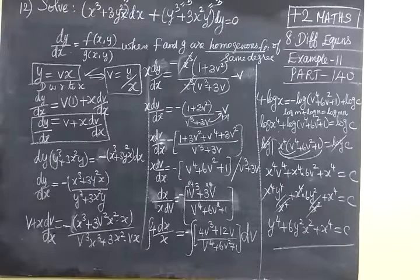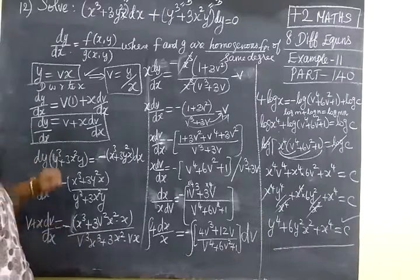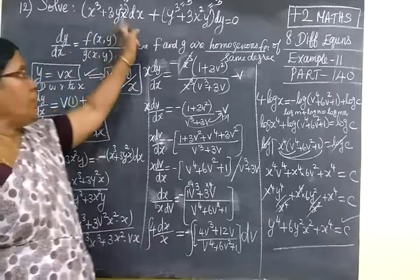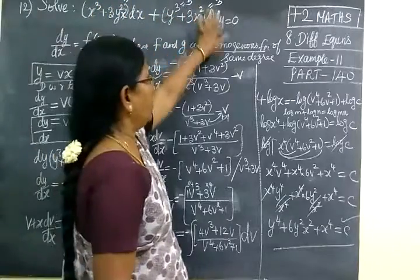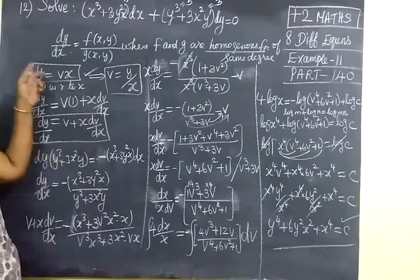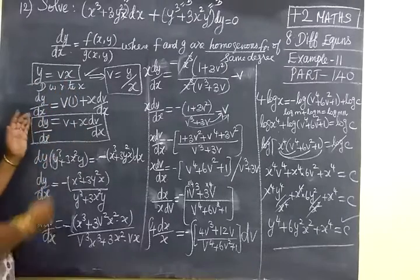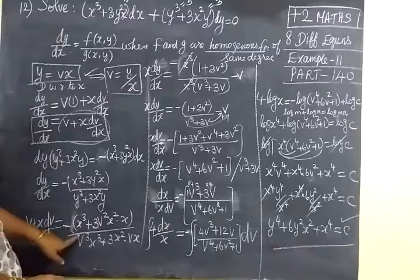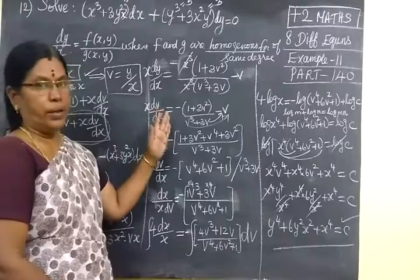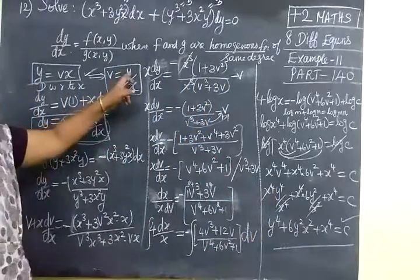The answer is y power 4 plus 6x squared y squared plus x power 4 equal to c. Steps are very long to work. First, see whether it is a homogeneous function — the degree should be the same, all degree 3. So we can use the variable separable method by writing y equal to vx and substituting. Write dy by dx, substitute, separate dv on one side and dx on the other side, then in the last replace v as y by x.